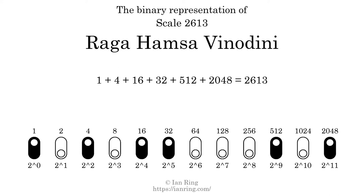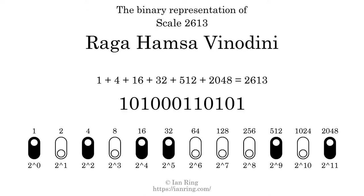The scale number not only enumerates the scale with a unique index, but it also literally describes the tonal content of the scale. Represented as a binary number in base 2, the scale number is 1 0 1 0 0 0 0 1 1 0 1 0 1 0 1.